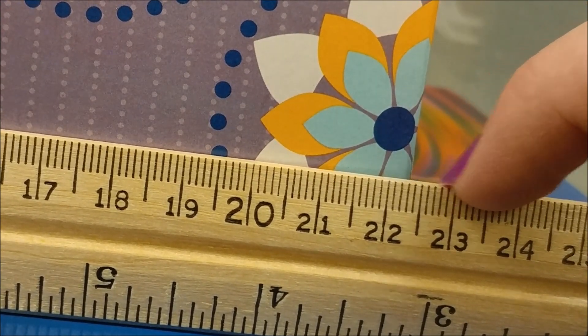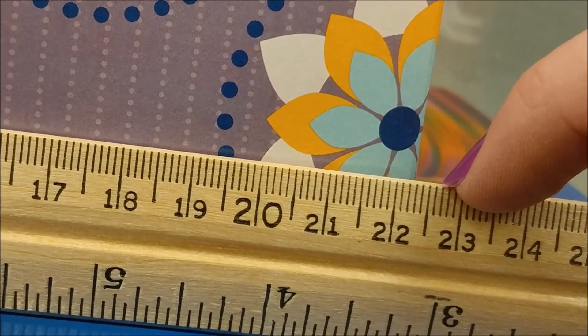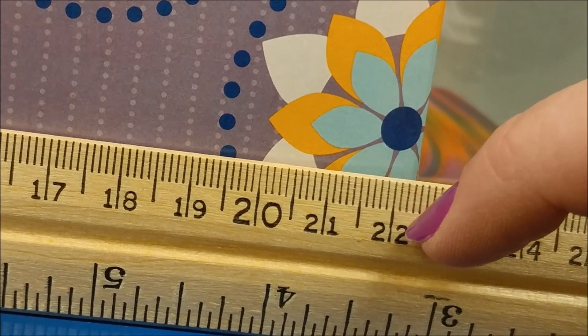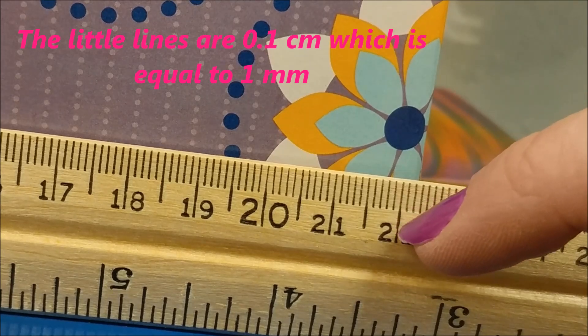So it's more than 22, but less than 23. Each of these teeny tiny little lines is a millimeter or point something of a centimeter.